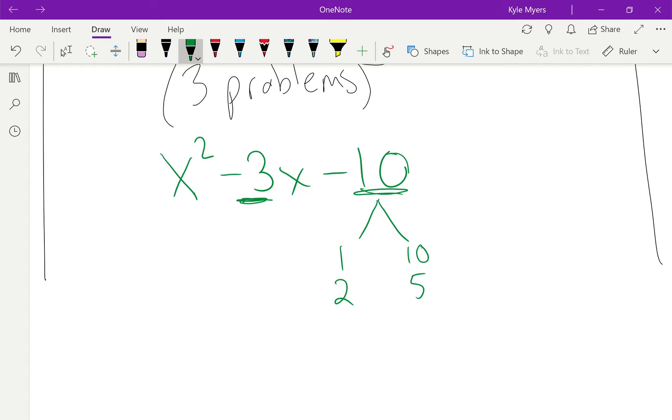Now since I have to get a negative 10 when I multiply, I need one of them to be negative. Since I want a negative 3, it makes more sense to make the 10 negative because if I subtract 1 and 10, 1 minus 10, I get a negative number. I want a negative number, but I get negative 9, not negative 3. So I need to make the 5 negative.